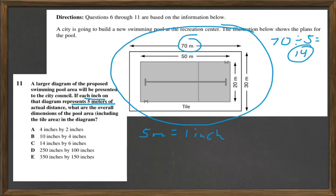And then we come over here and find this 30. And we have 30, and we divide that by 5, and that's going to equal 6. So our dimensions are going to be 14 by 6, which is C.